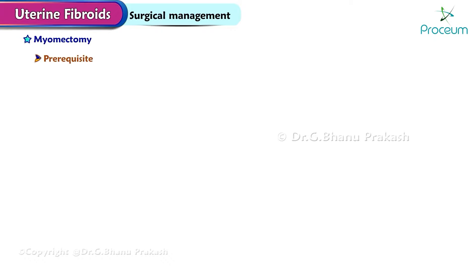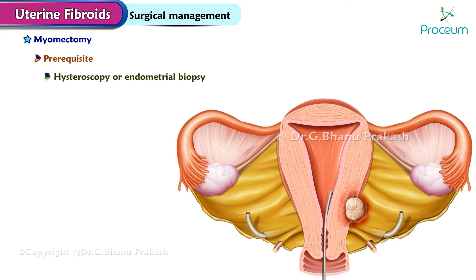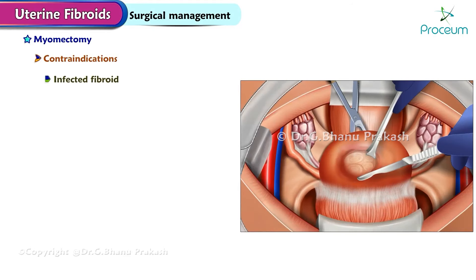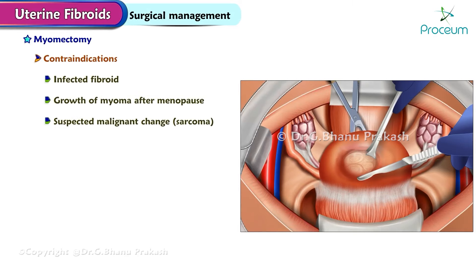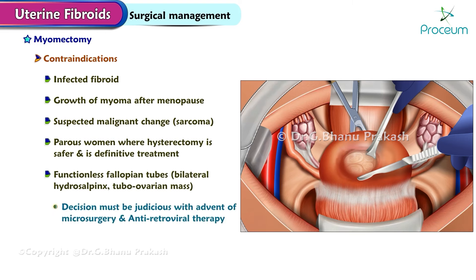Prerequisite for myomectomy: hysteroscopy or hysterosalpingography to exclude any submucous fibroid, polyp, or tubal block; hysteroscopy or endometrial biopsy in cases of irregular cycles, not only to remove a polyp but also to exclude endometrial carcinoma; examination of the husband from a fertility point of view - semen analysis. Contraindications of myomectomy: infected fibroid; growth of myoma after menopause; suspected malignant change; parous women where hysterectomy is safer and is a definitive treatment; functionless fallopian tubes due to bilateral hydrosalpinx or tubo-ovarian mass; pelvic or endometrial tuberculosis; during pregnancy or cesarean section.